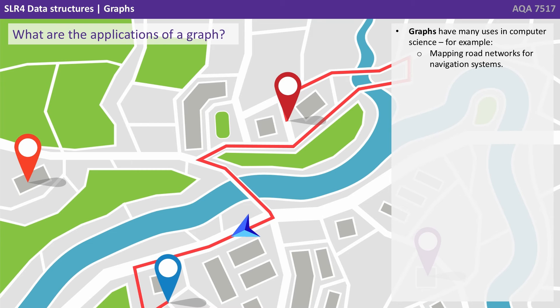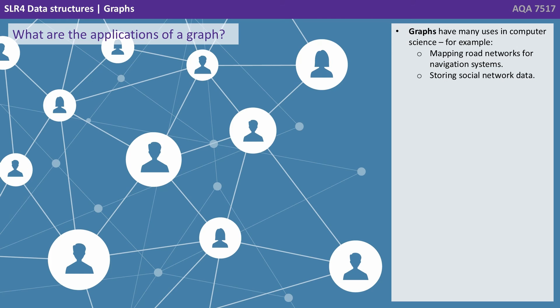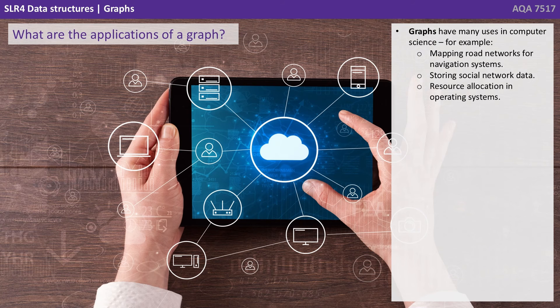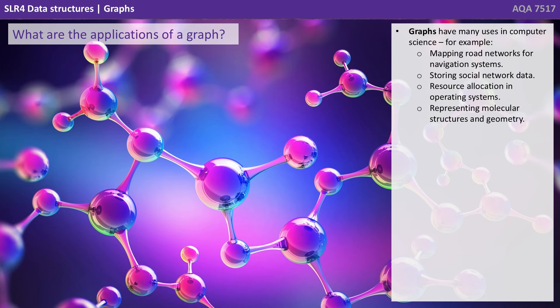So what are the applications of a graph? Well graphs have many uses in computer science. For example, mapping road networks for navigation systems, storing social network data, resource allocation in operating systems, and representing molecular structure and geometry.